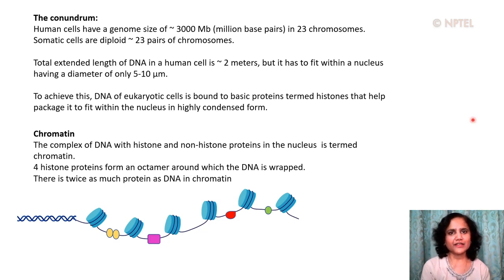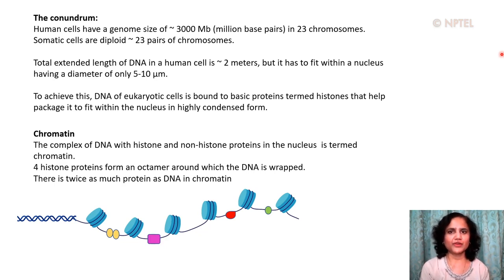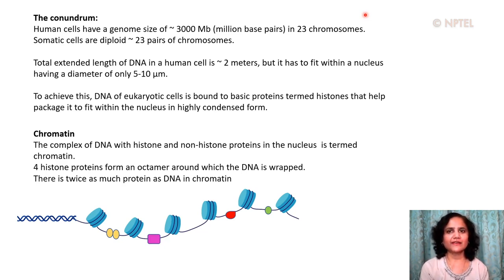How is it that a nearly two meters long DNA molecule can fit within a tiny nucleus having a diameter of only 5 or 10 microns? This is the conundrum we will discuss today. Packaging of DNA with histones to form nucleosome arrays that further fold into a 30 nanometer fiber condenses DNA to a certain extent, but there are additional levels of folding of chromatin as well. Today we will discuss a class of non-histone proteins involved in higher order chromosome organization.